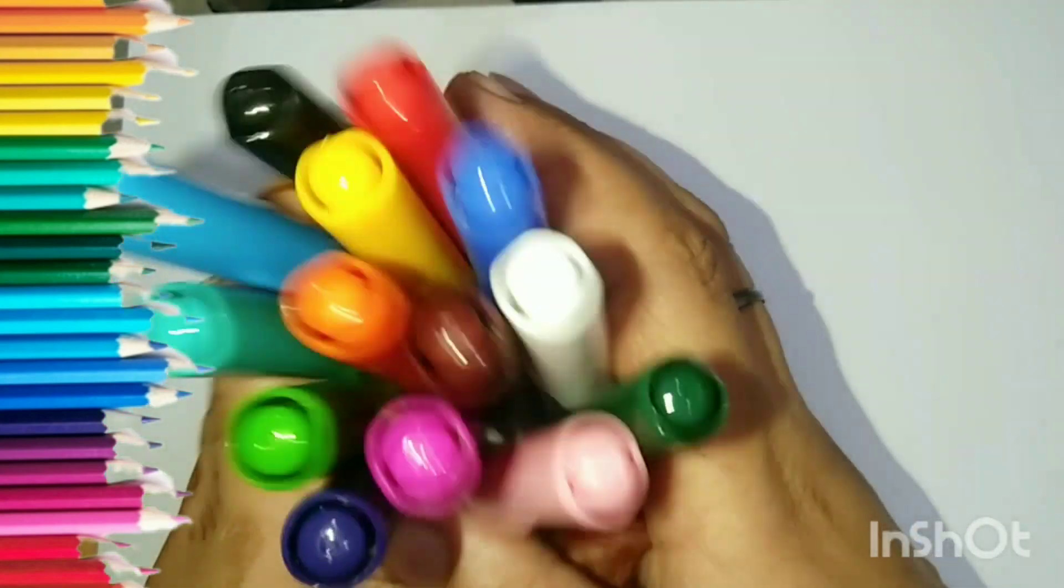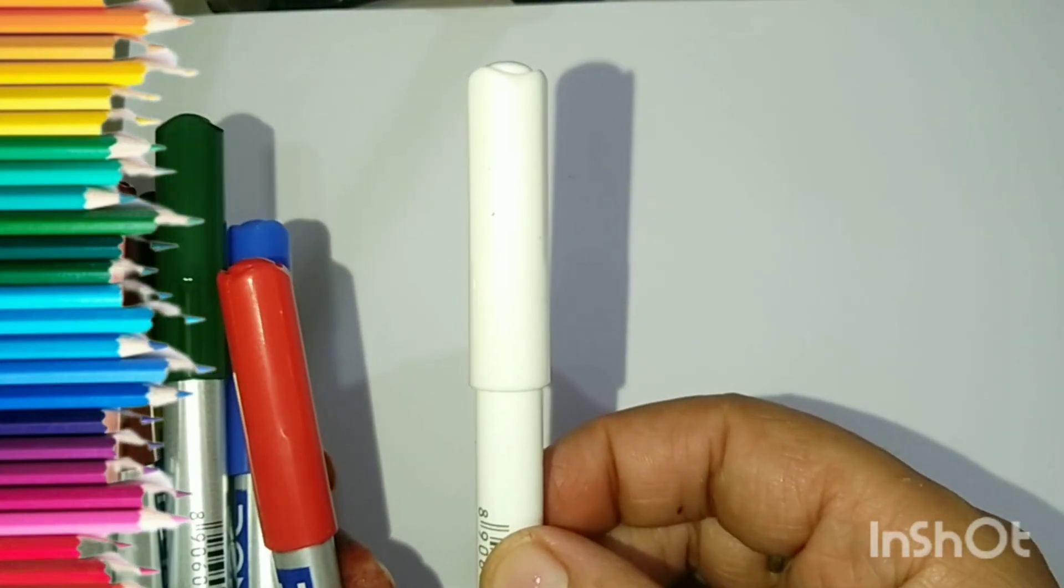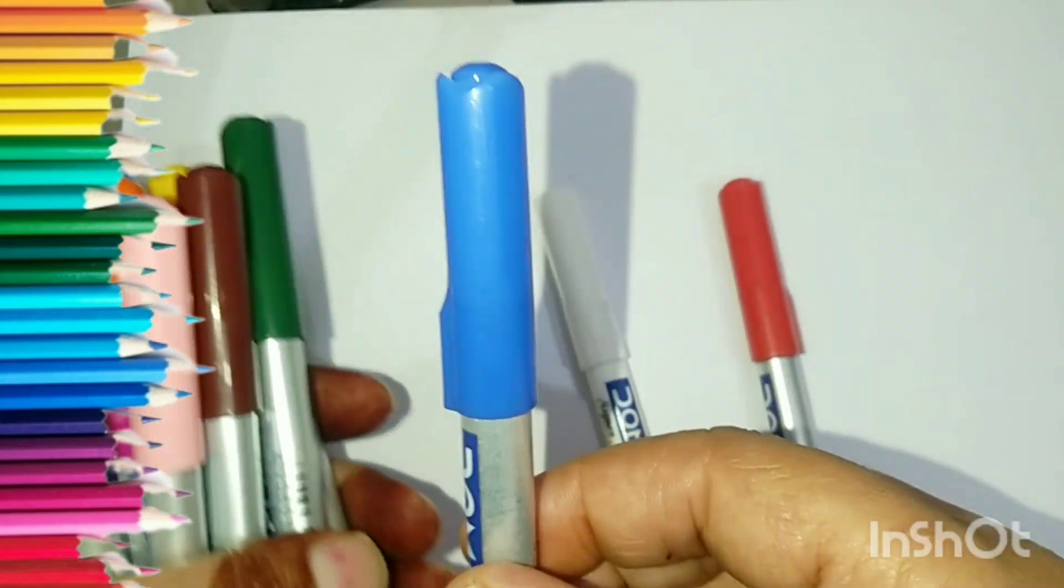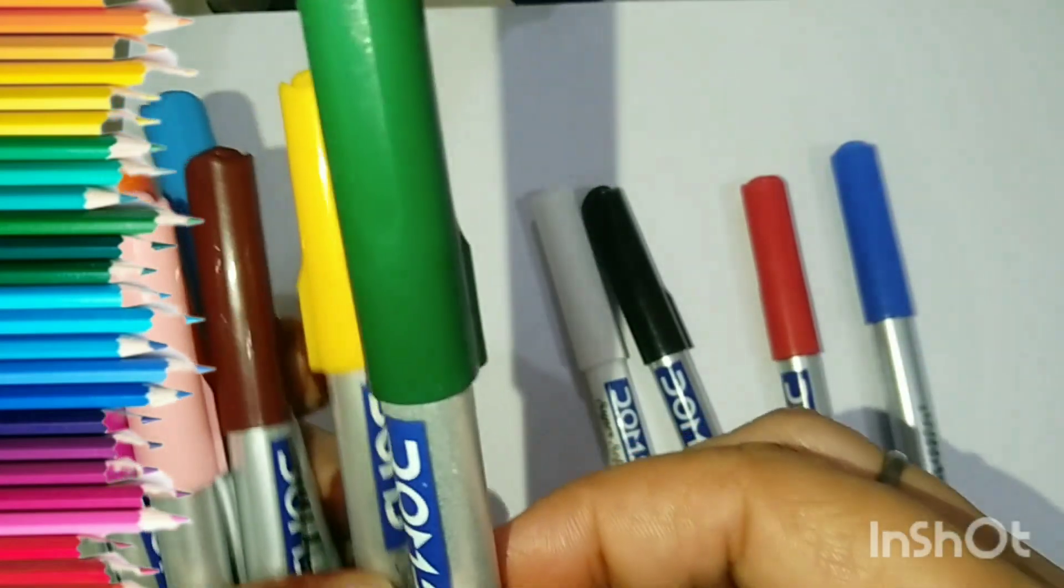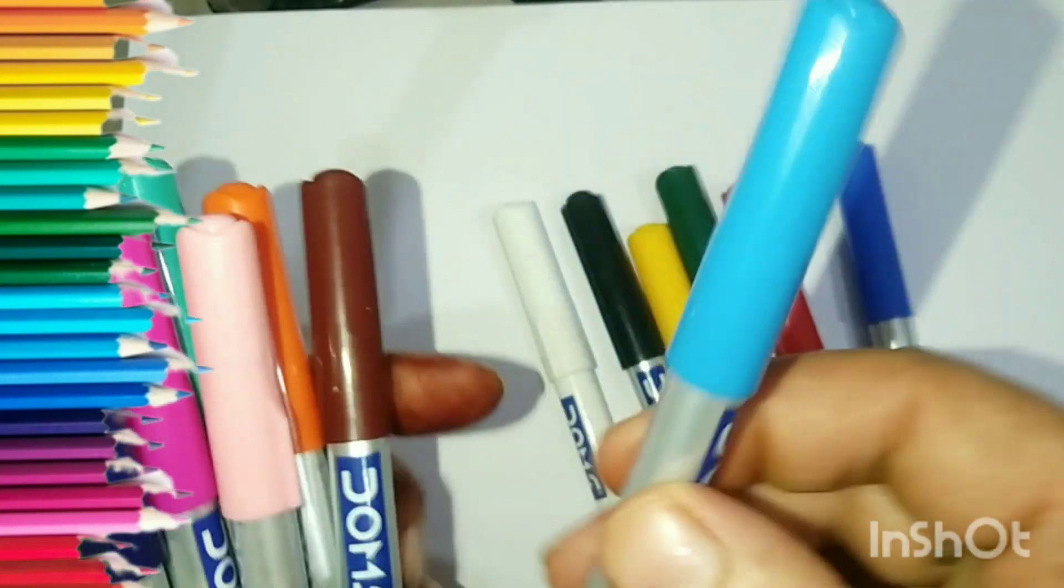Kids, now let us start. Let us learn the colors: white, red, blue, black, deep green, yellow, sky blue.